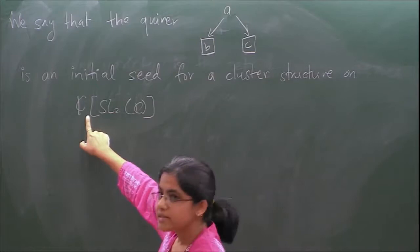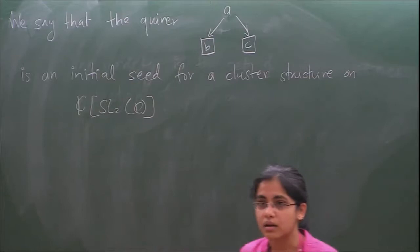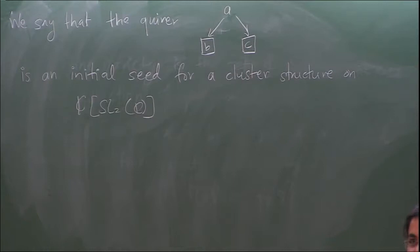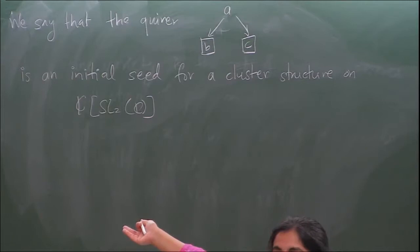We assigned a quiver and some variables, and that tells us this coordinate ring has a cluster structure. In the next few examples, there is no single rule — people have found rules in small cases. For Grassmannians, people have found a rule for how to find the quiver. In other varieties it's different, and in some it's not known.